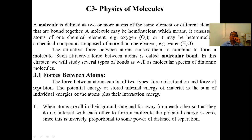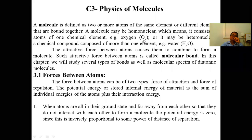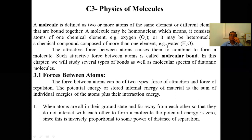A molecule is defined as two or more atoms of the same element (same chemical composition) or a different element (different chemical composition). A molecule may be homonuclear, which means it consists of atoms of one chemical element — for example, oxygen O₂, same chemical composition. Or it may be a heteronuclear molecule, meaning different chemical composition — for example, water H₂O.